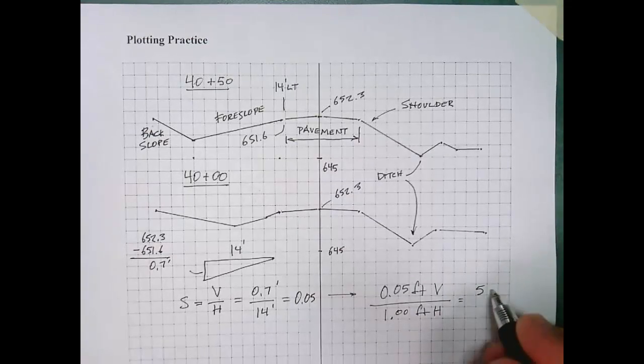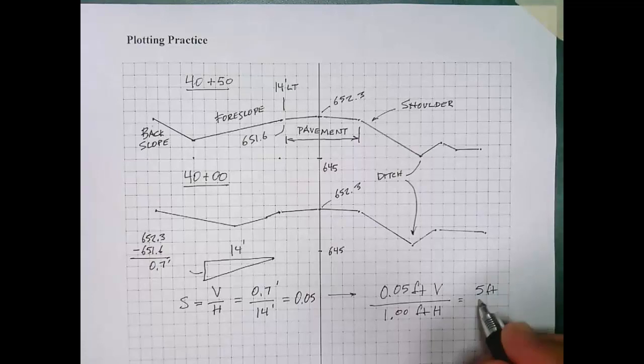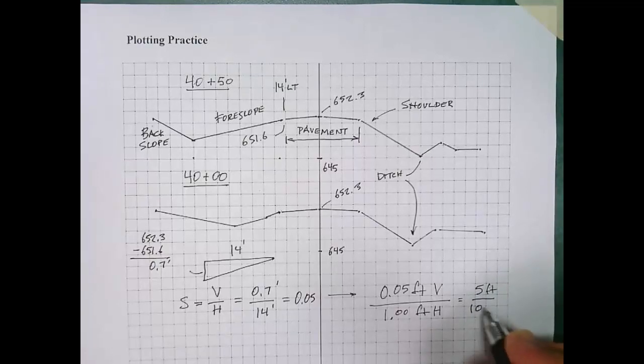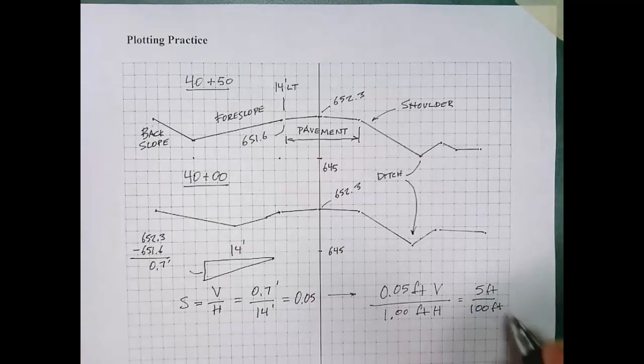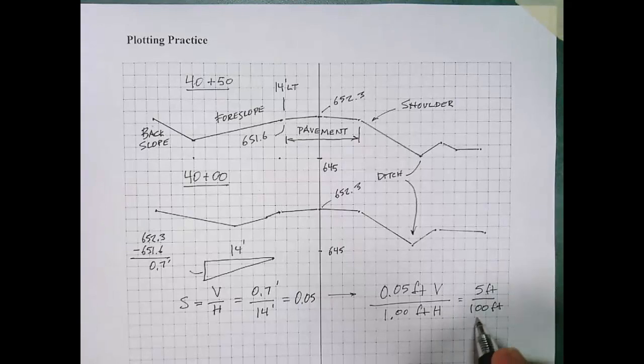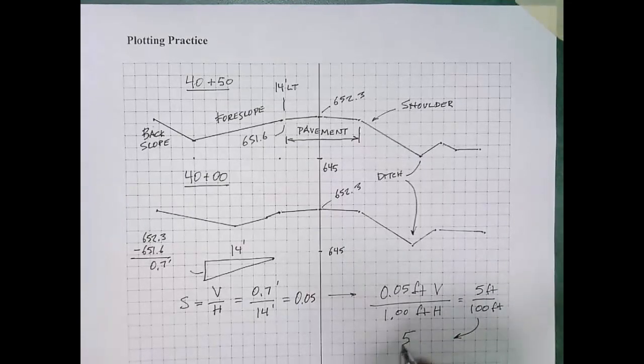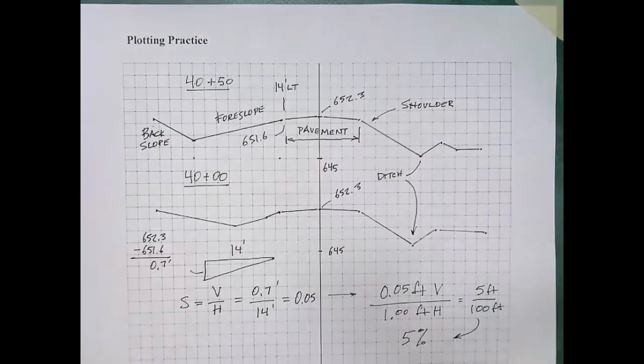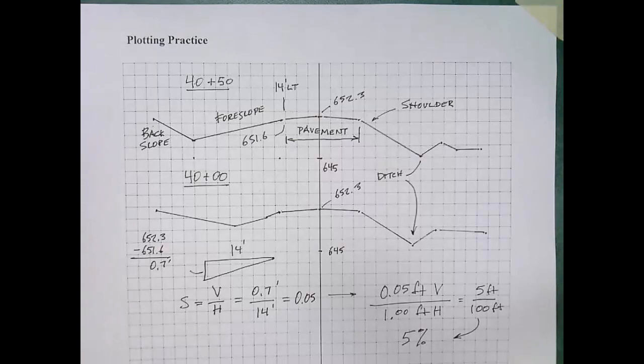I think you can simplify this a bit and see that that's 5 feet vertically for every 100 feet horizontally. Well, you can see that we can change that ratio to a percentage, and this indeed is a 5% slope. So, that's how we calculate slope using cross section data.